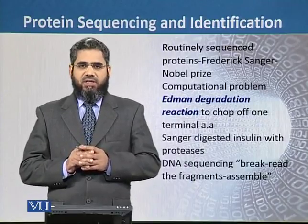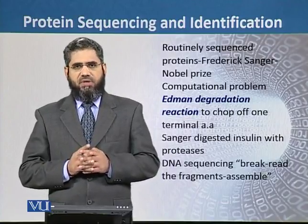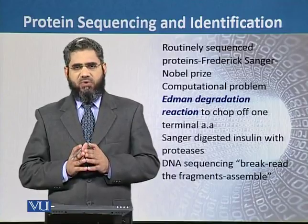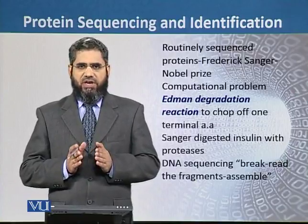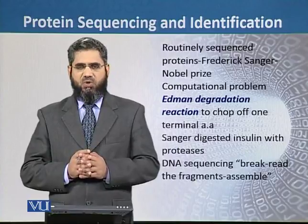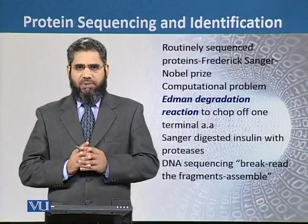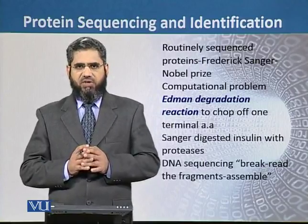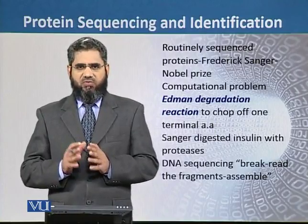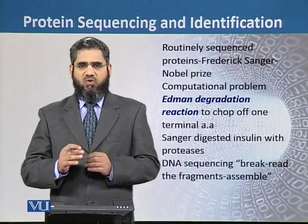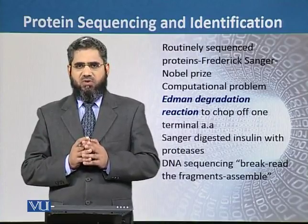Sanger overcame this problem by using protease enzymes to degrade the insulin protein into small peptides. Since protease enzymes degrade proteins at certain specific points, Sanger sequenced all the resulting small peptides separately. He then used an overlapping fragment strategy — using fragments that overlapped with each other — to reconstruct the full sequence of insulin.